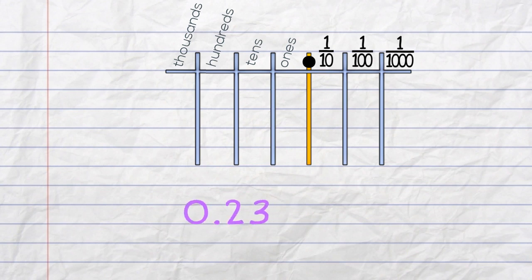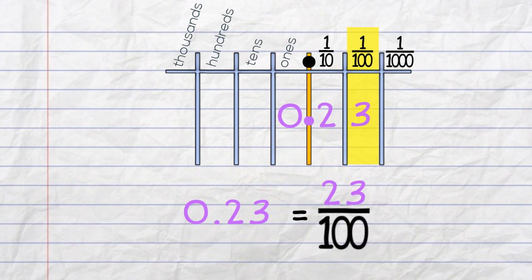0.23. This is 23 over something. Now we get the denominator. First column is tenths. Second column is hundredths. We have 23 hundredths.